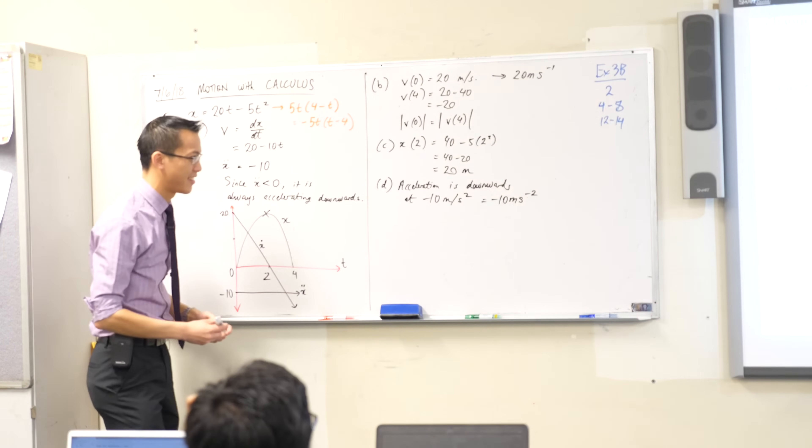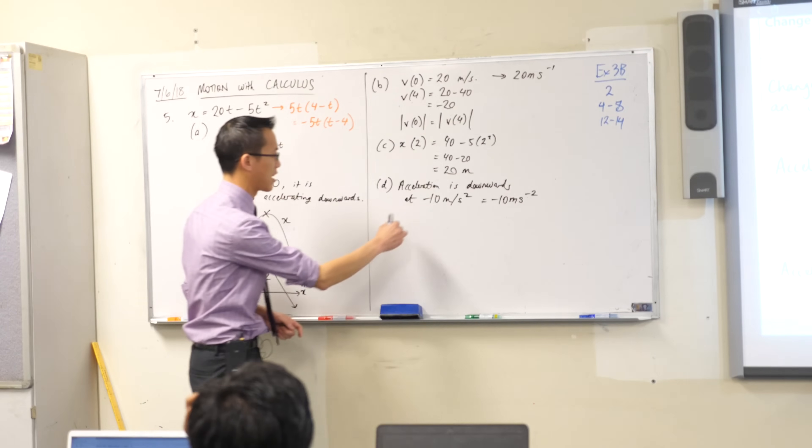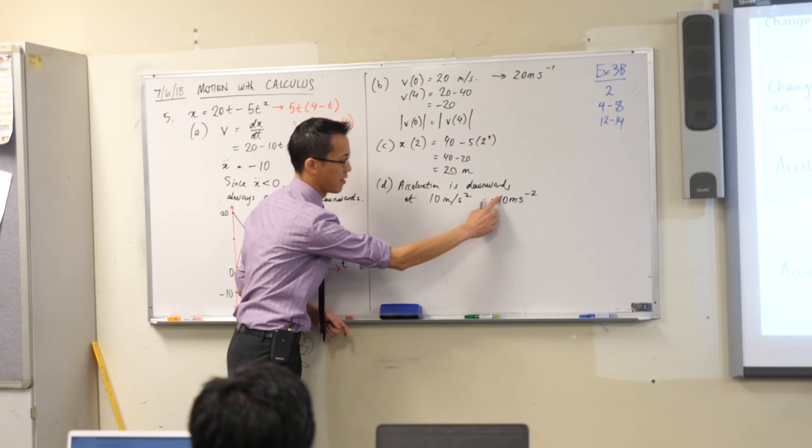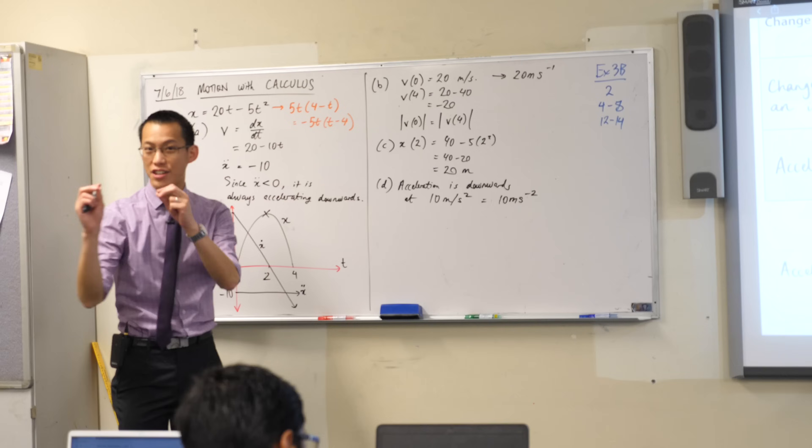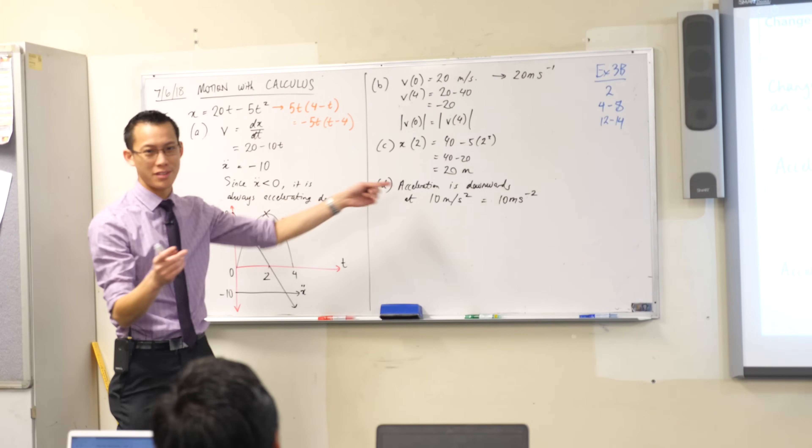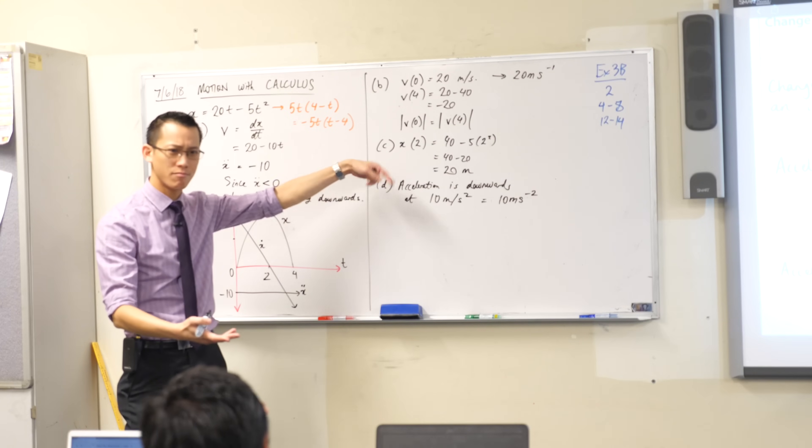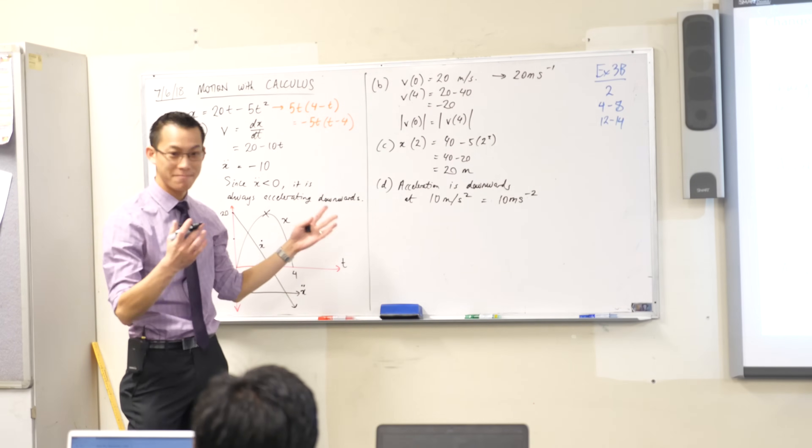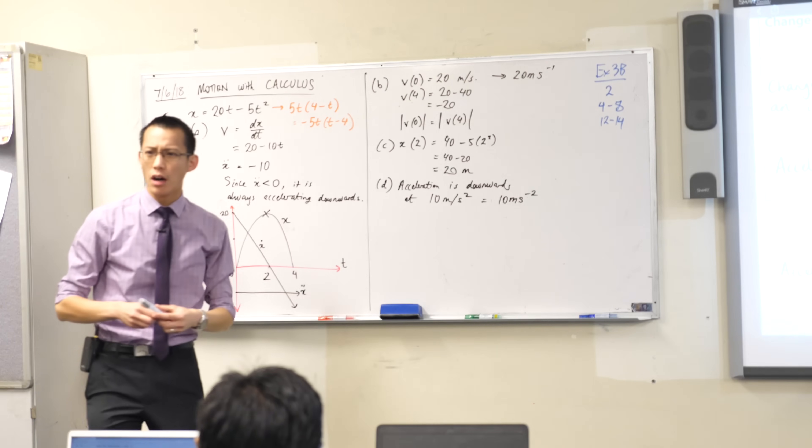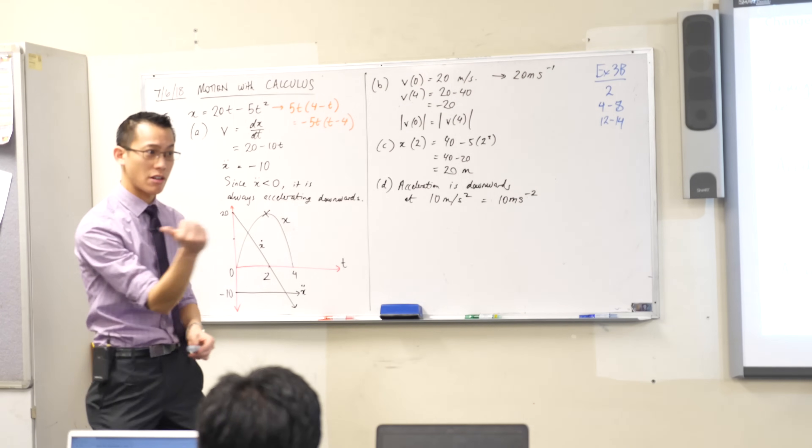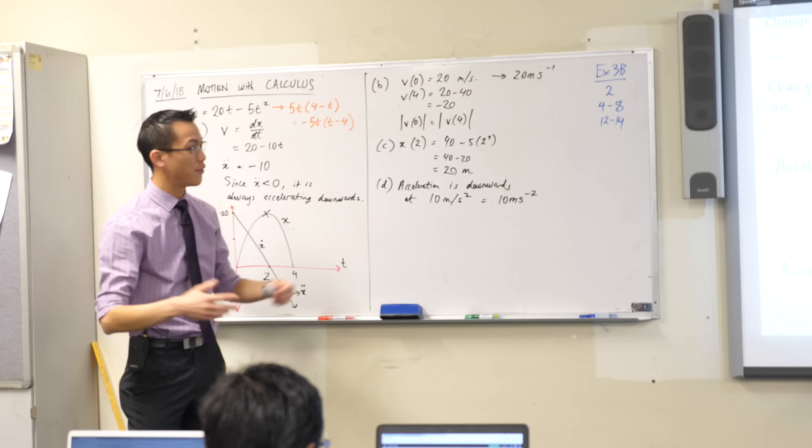If you've said acceleration is downwards, do you need the magnitude? Oh, yeah, I don't actually, because I, thank you. I describe direction using words, so I don't need to put the negative sign, because the negative sign, it's, yeah, exactly, it's, yeah, good call. So, are you okay with that? I've described the direction, I've described its magnitude, that's all I need for a vector.